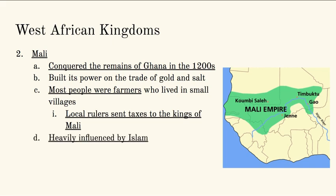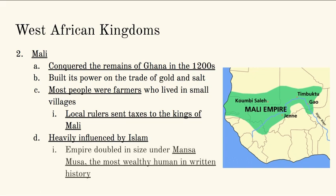Mali was heavily influenced by Islam. Ghana had some Islamic influence, but not that much. Mali, on the other hand, was heavily influenced by Islam. When Mansa Musa takes control of the Mali empire, he almost doubles the size basically because they're all united — not only by language and way of life, but by religion. When everybody is that united under one ideology, it's pretty easy to control them and expand. Mansa Musa was possibly the most wealthy human in written history we have record of. He actually devalues gold on one of his trips because he has so much of it — because he's the emperor of Mali, which is producing gold and salt.